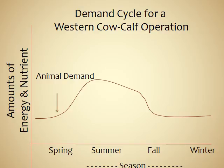This slide highlights the demand cycle for a western cow-calf operation. On the x-axis we have the season and on the y-axis is the amount of energy and nutrients required by the animal. During winter and early spring the cow has fairly low nutrient requirements. However, once she approaches her third trimester of gestation, the calf inside begins to double and triple in size, requiring more energy. The cow's demand goes up through late spring and continues until the calf is born, at which point the cow begins to lactate — that is when she needs the most nutrients in her entire life.